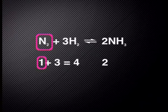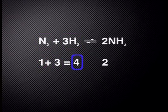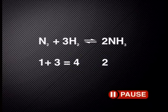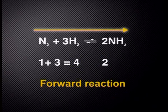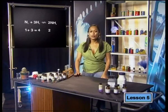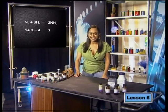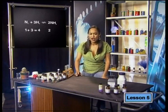Let's now look at the Haber process again to see how pressure can affect this equilibrium. There is only one mole of nitrogen reacting with three moles of hydrogen, making four moles of reactants. There are two moles of products. Which reaction will be favored if we increase the pressure? Of course it will be the forward reaction. The equilibrium shifts to decrease the pressure again.